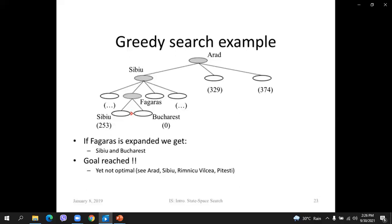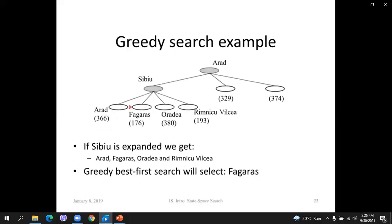The optimal path would be: Arad, Sibiu, Rimnicu Vilcea, and Pitesti. Where does it go wrong? It goes wrong because we think Fagaras is better since it is more direct to Bucharest, but if we took that detour, we would get to Bucharest faster. So we find a solution, but not the optimal solution.